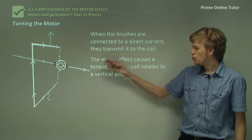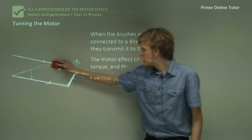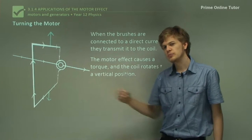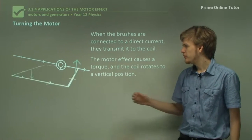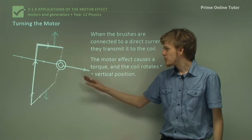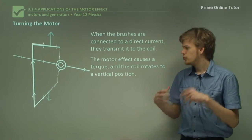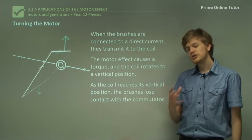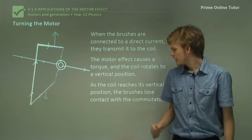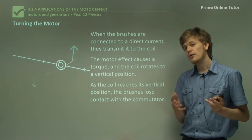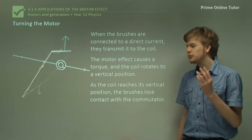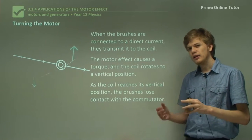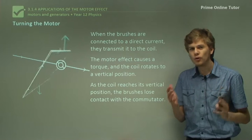So it gets all the way up to a vertical position. But what will happen after this? What's happening to the brushes as they go over the split-ring commutator? Once the commutator reaches the vertical position, the split in it is what's connected to the external current. So as the coil reaches its vertical position, the brushes lose contact with the commutator. That means that just as it gets to its vertical position, there is no current running through the armature and it stops experiencing a force. But that won't stop the armature from turning — its momentum will carry it on a little bit further than its vertical position.